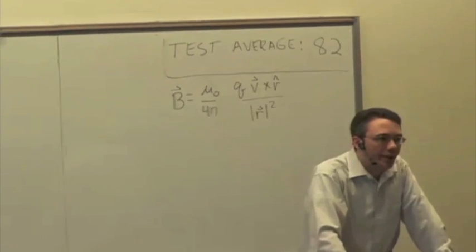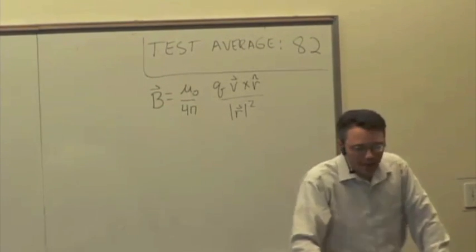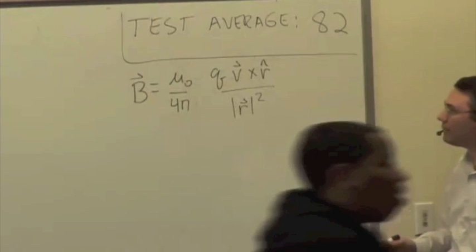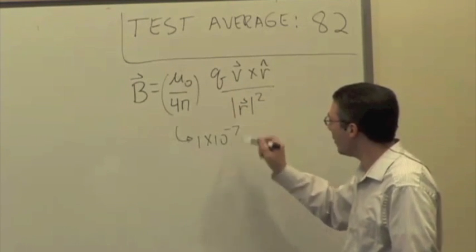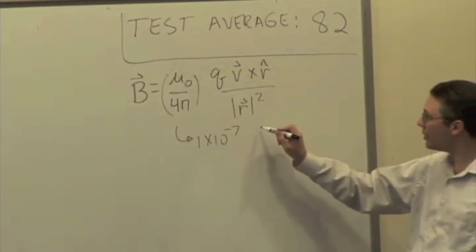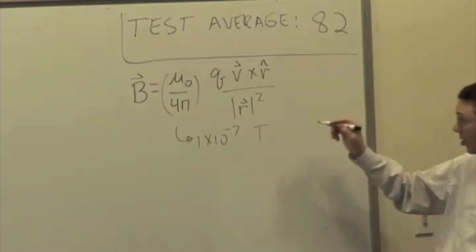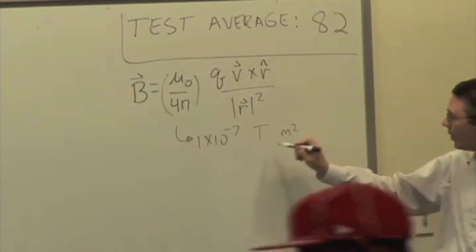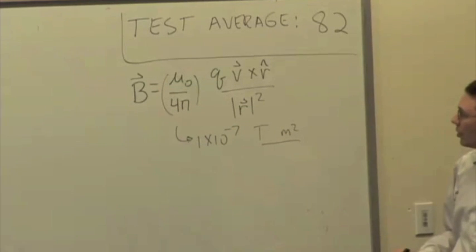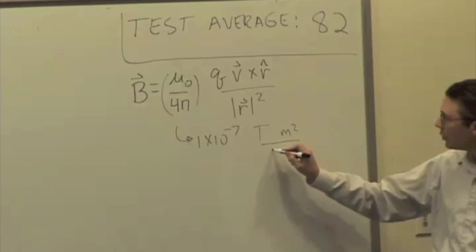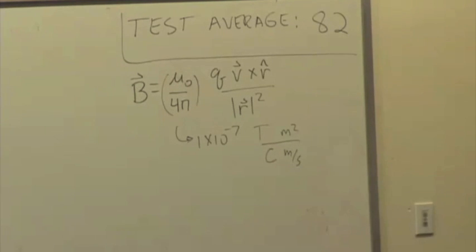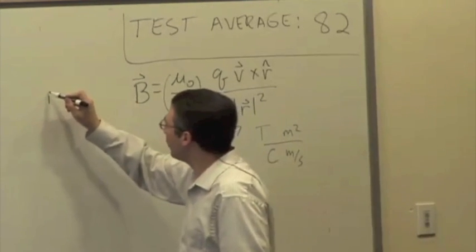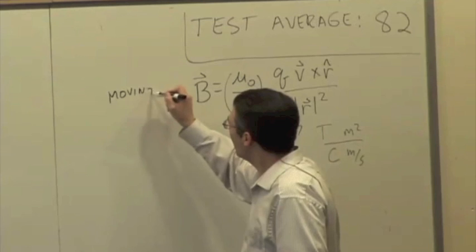Magnetic field of a point charge. Magnetic B is equal to mu naught over 4 pi, which is just a constant equal to 1 times 10 to the minus 7 in the appropriate units, which are units of Tesla times meters squared over coulomb times meters per second — funny looking units, but the unit of a magnetic field is Tesla, so that should work out. This formula is for a single charged particle, a moving point charge.